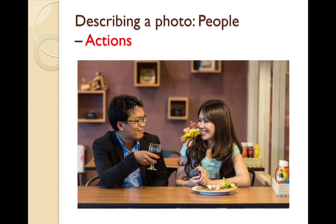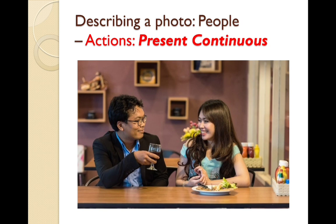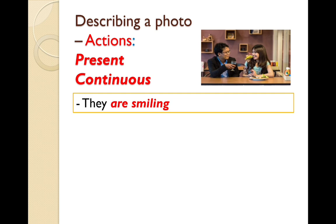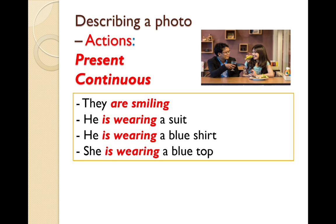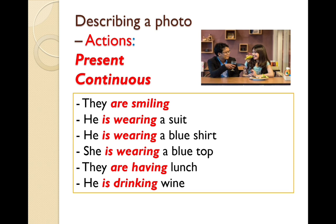Now what about actions? We use the present continuous. For example: they are smiling; he is wearing a suit; he is wearing a blue shirt; she is wearing a blue top; they are having lunch; he is drinking wine; he is wearing glasses. If you'd like more information about the present simple or present continuous tense, check out the links in the description below.